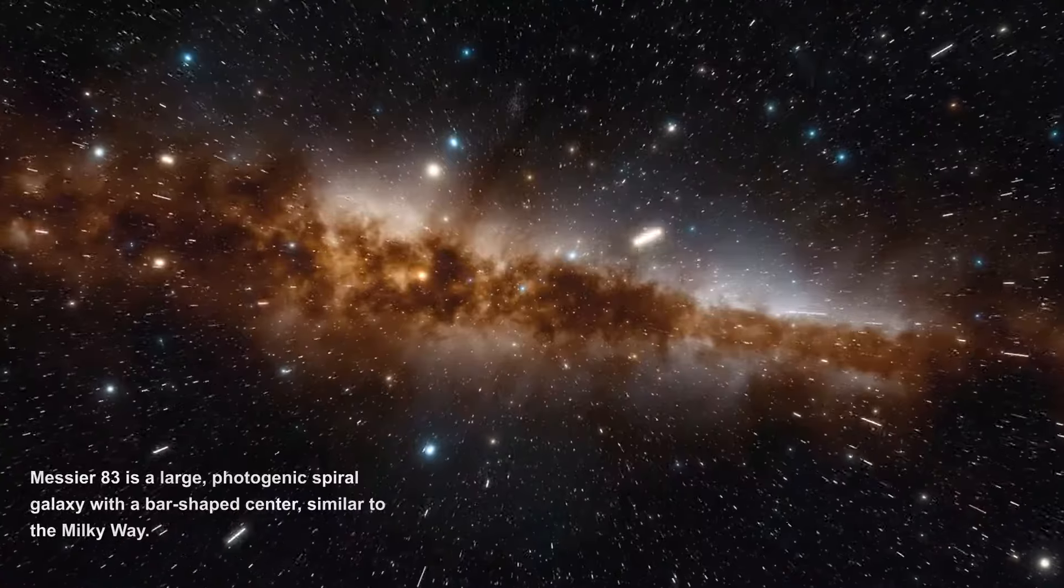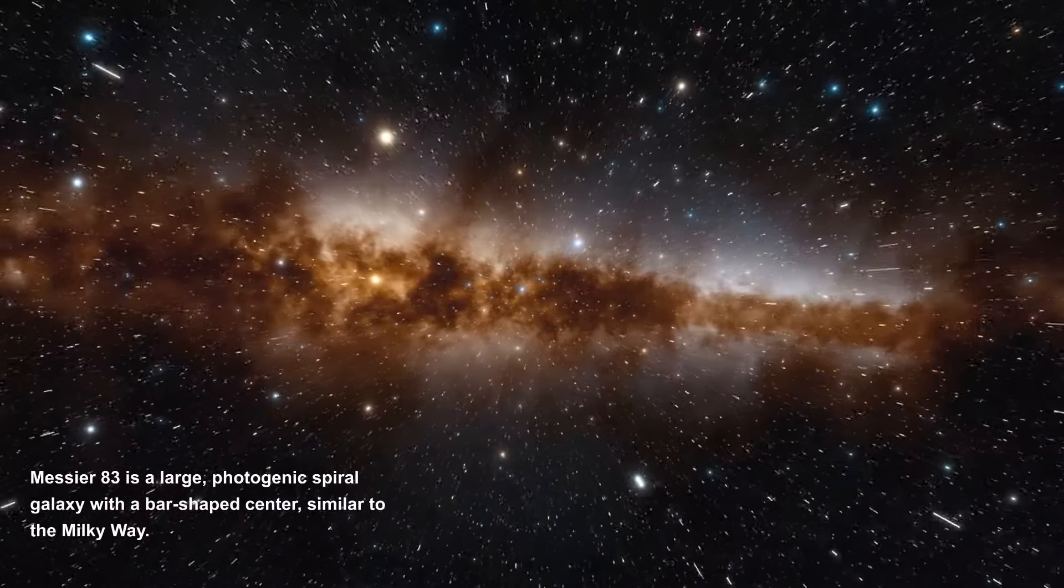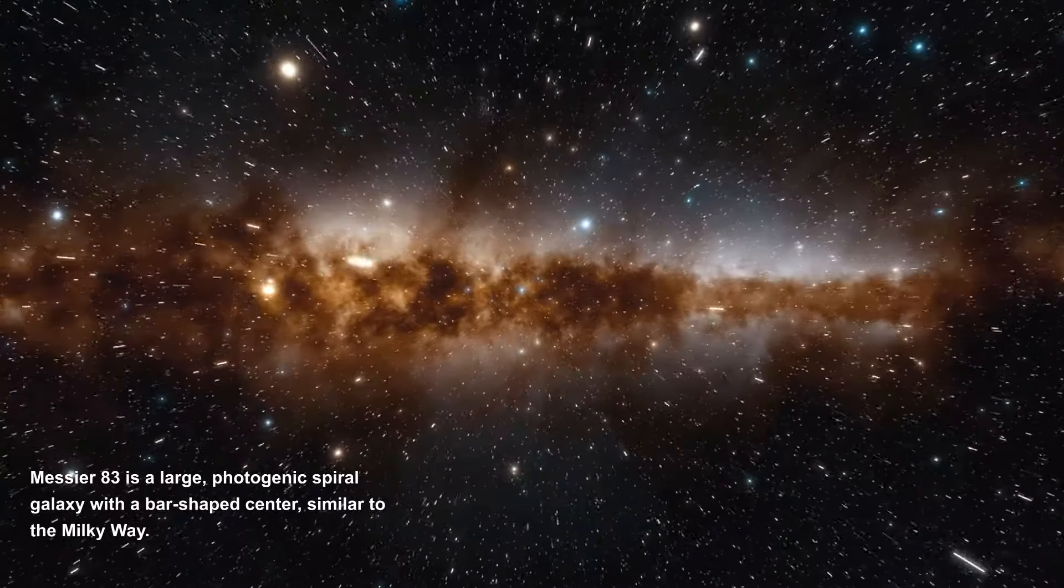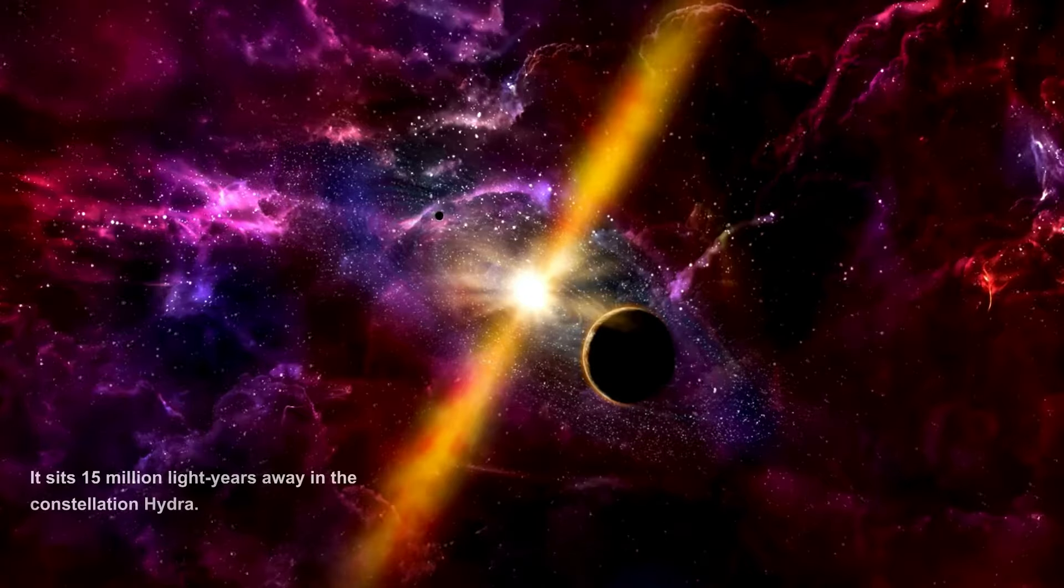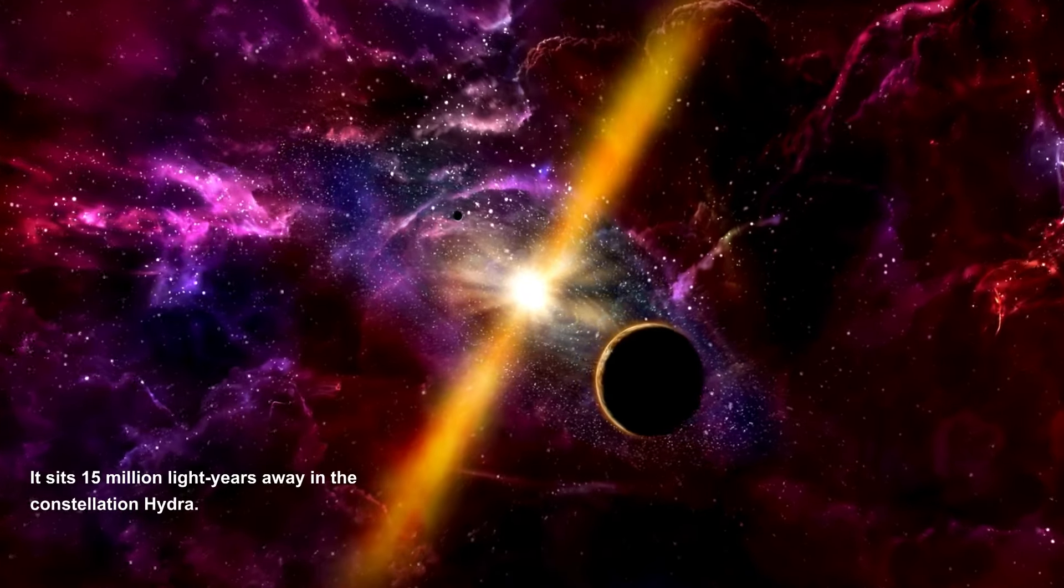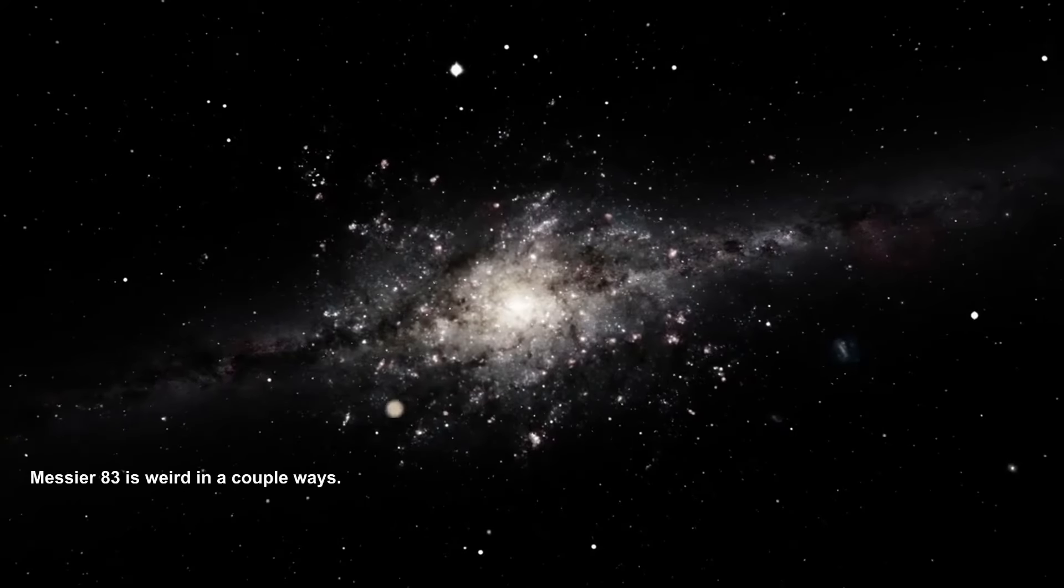Pretty Pinwheel. Messier 83 is a large photogenic spiral galaxy with a bar-shaped center, similar to the Milky Way. It sits 15 million light-years away in the constellation Hydra. Messier 83 is weird in a couple ways.